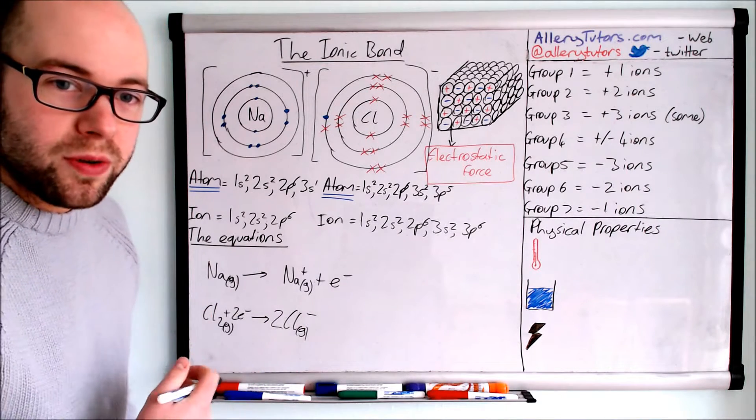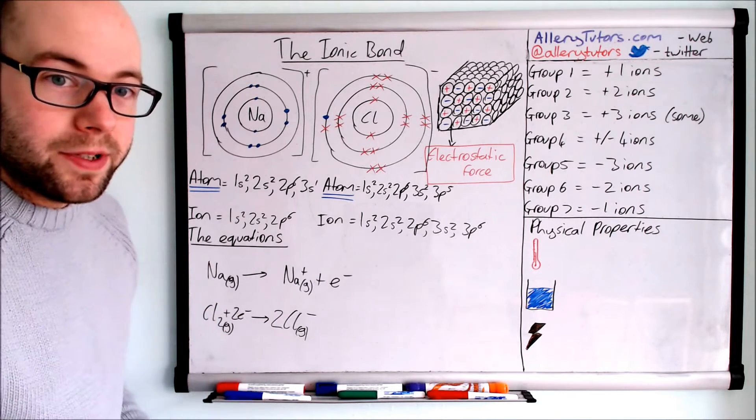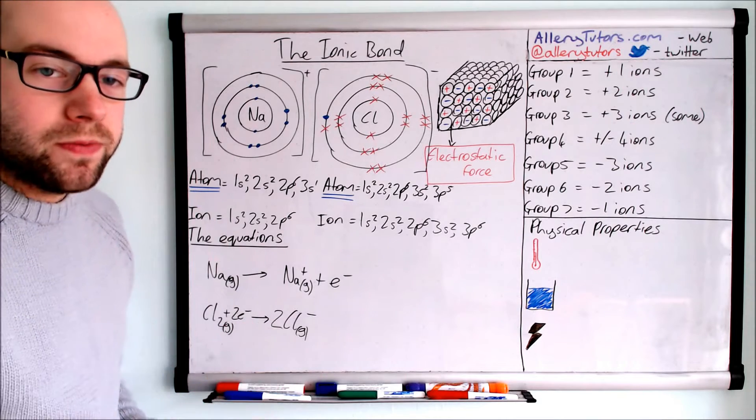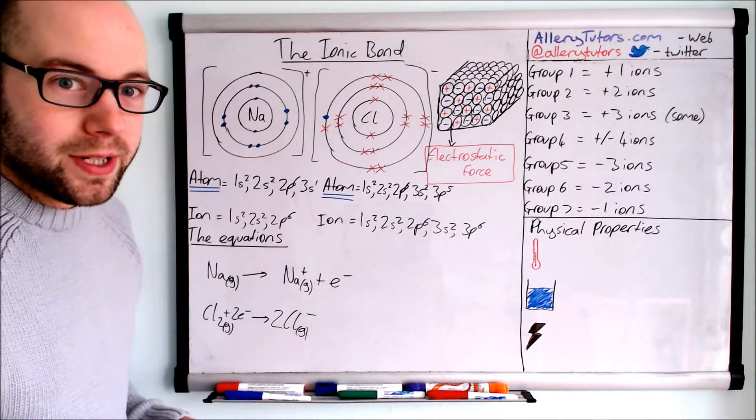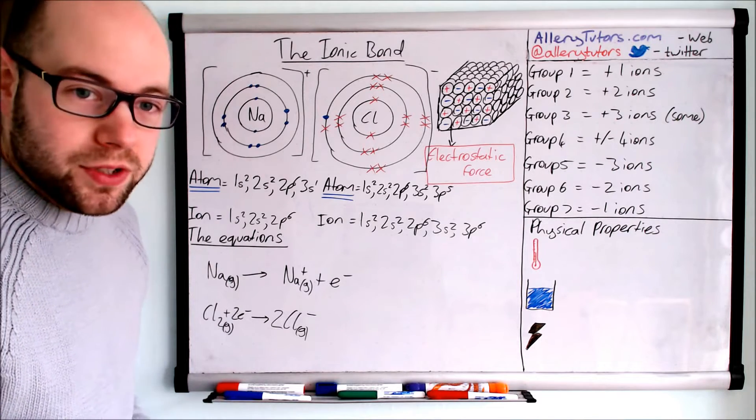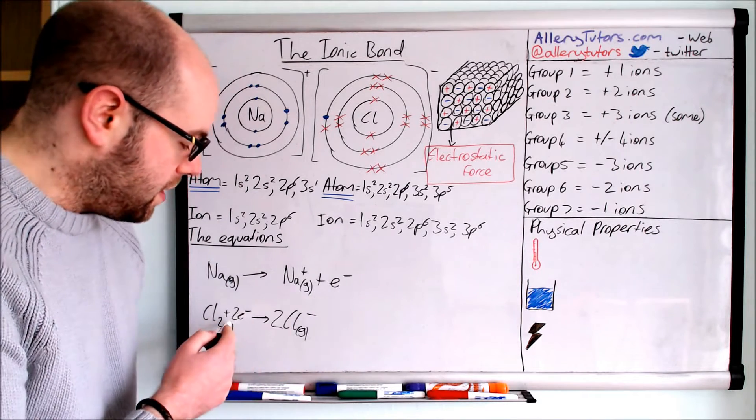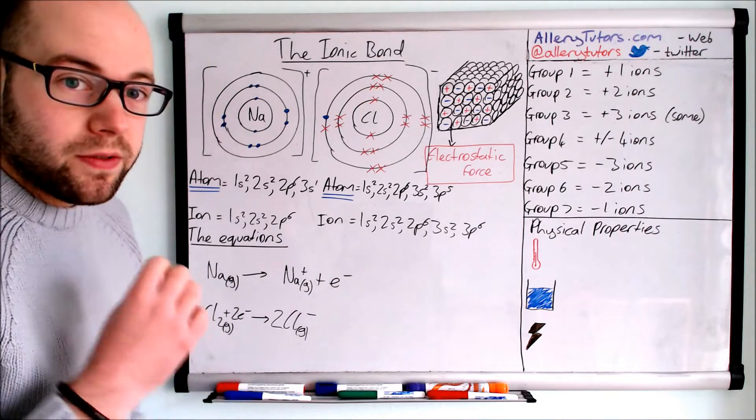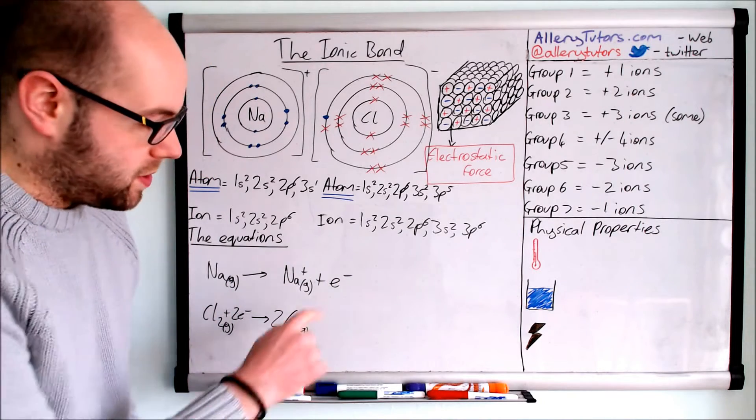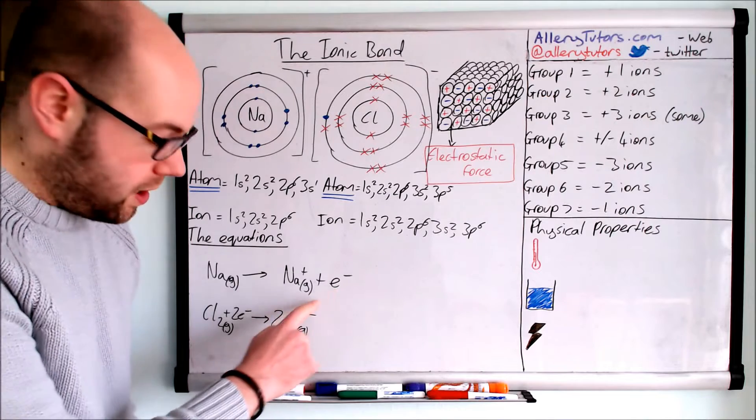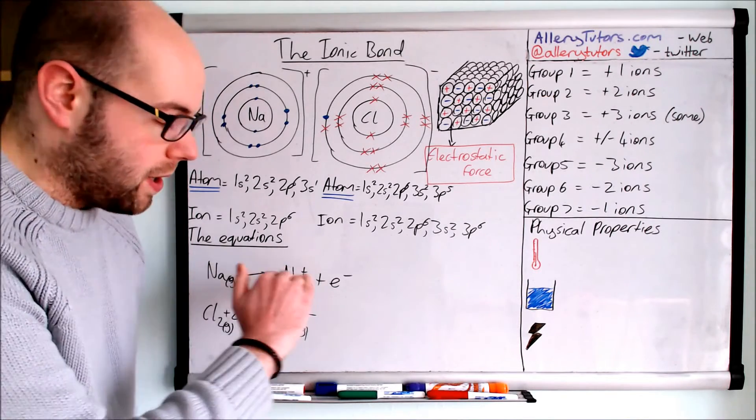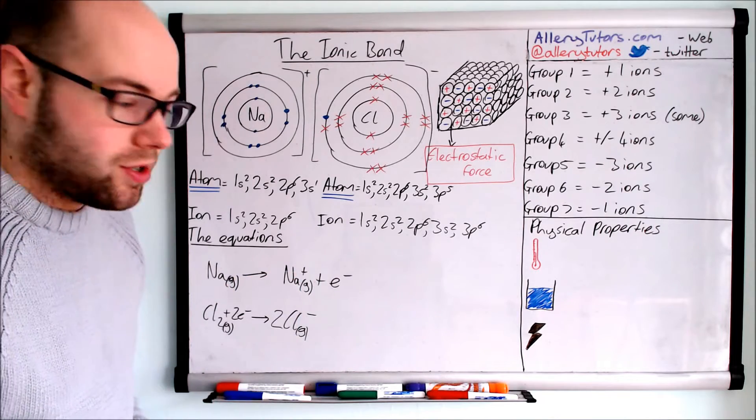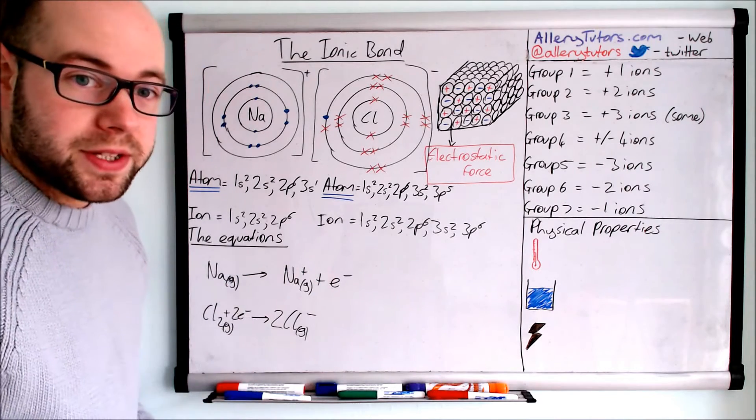These are half equations because they only show us what's happening to one element. We can combine these though to form what we call an ionic equation. To do this, it's a little bit like a simultaneous equation. What we have to do is multiply the top row here by two. The reason why we have to multiply it by two is because we've got one electron here and two electrons here. When we're writing an ionic equation from two half equations, we have to make sure that the electrons equal the same or are balanced.